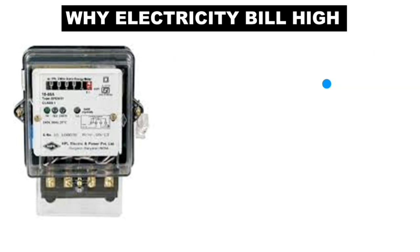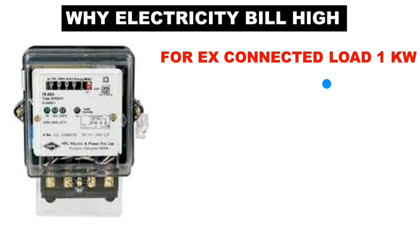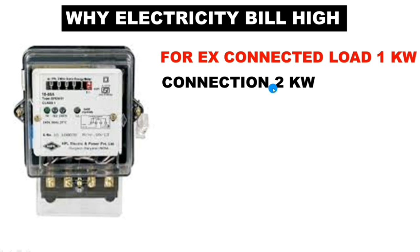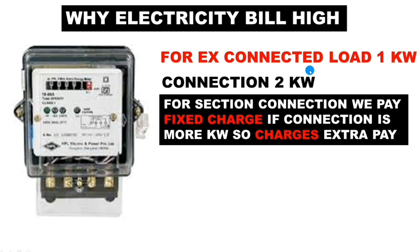Here is one more concept — if running load is more than sanctioned load, we have to pay a penalty, so why don't we just sanction more kilowatt? If your connected load is 1 kilowatt but you sanction 2 kilowatt, you have to pay a fixed charge for the sanctioned load. Sanction 1 kilowatt, pay fixed charge for 1 kilowatt; sanction 2 kilowatt, pay fixed charge for 2 kilowatt.